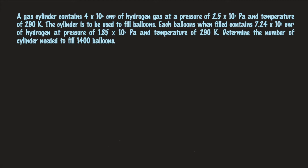Before we can start doing the calculation, we need to know what information is given to us. We were given the volume, the pressure and also the temperature. It means that we can employ the ideal gas law. But before using the ideal gas law, we need to ensure that all the units are correct. The volume should be in litres and the pressure should be in atm, so let's convert these values beforehand.